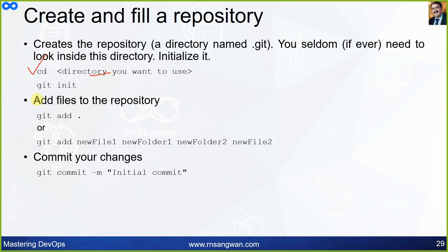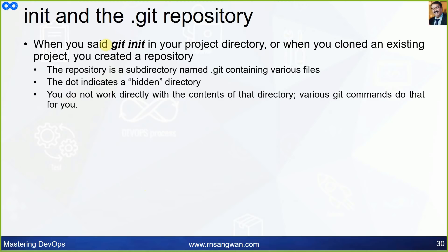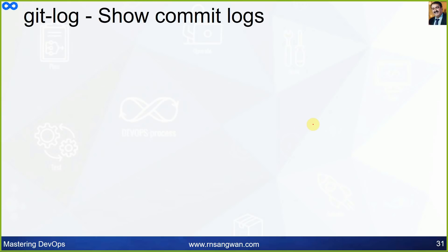To create and fill a repository: go to the directory with 'cd <directory>', run 'git init', then add files with 'git add .' or individual files. The .git directory is created when you run 'git init' or clone a project — it's a hidden subdirectory. The dot indicates it is hidden, not visible with a normal 'ls' command. You never work directly inside .git; git commands do that for you.